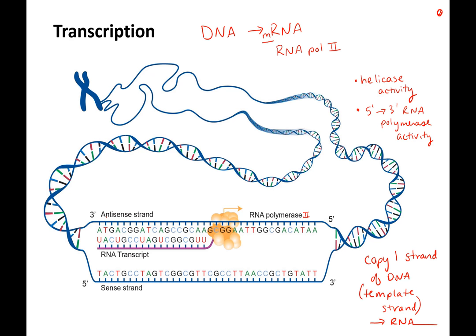Instead of calling this the antisense strand, we'll call it the template strand. RNA transcripts are always made five prime to three prime; therefore, the template strand is read three prime to five prime. The other strand that is not copied is called the coding strand. RNA polymerase copies by base pairing, and like everything we've learned, it's antiparallel five prime to three prime.